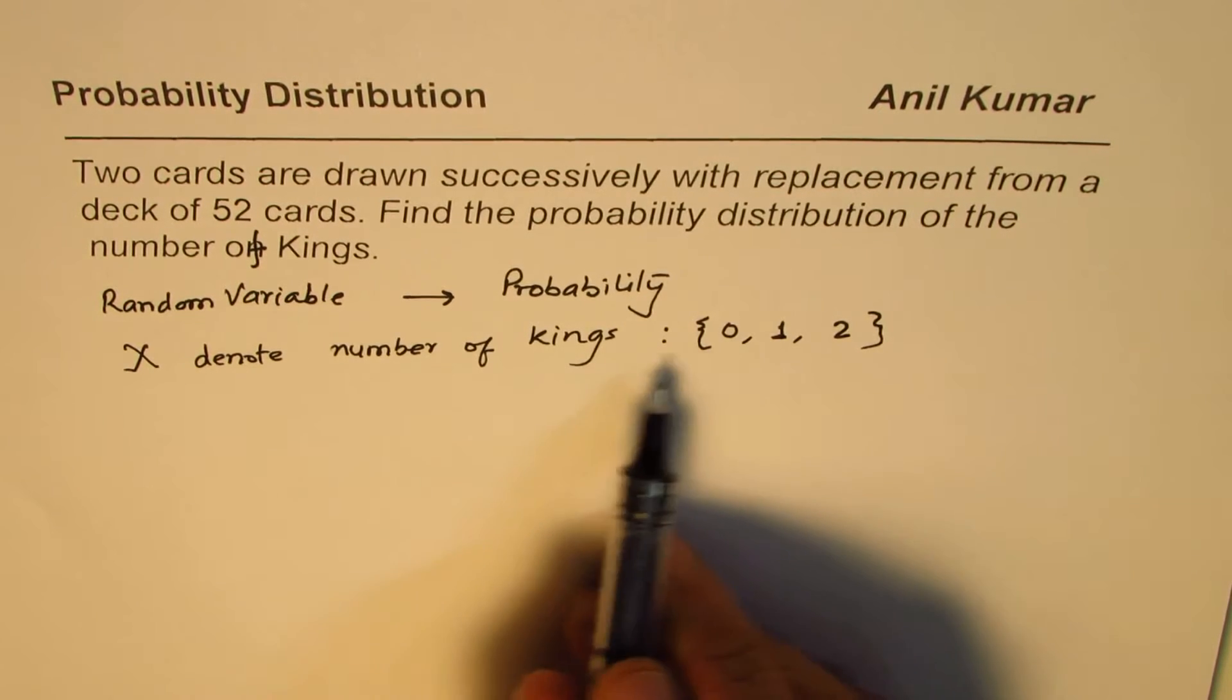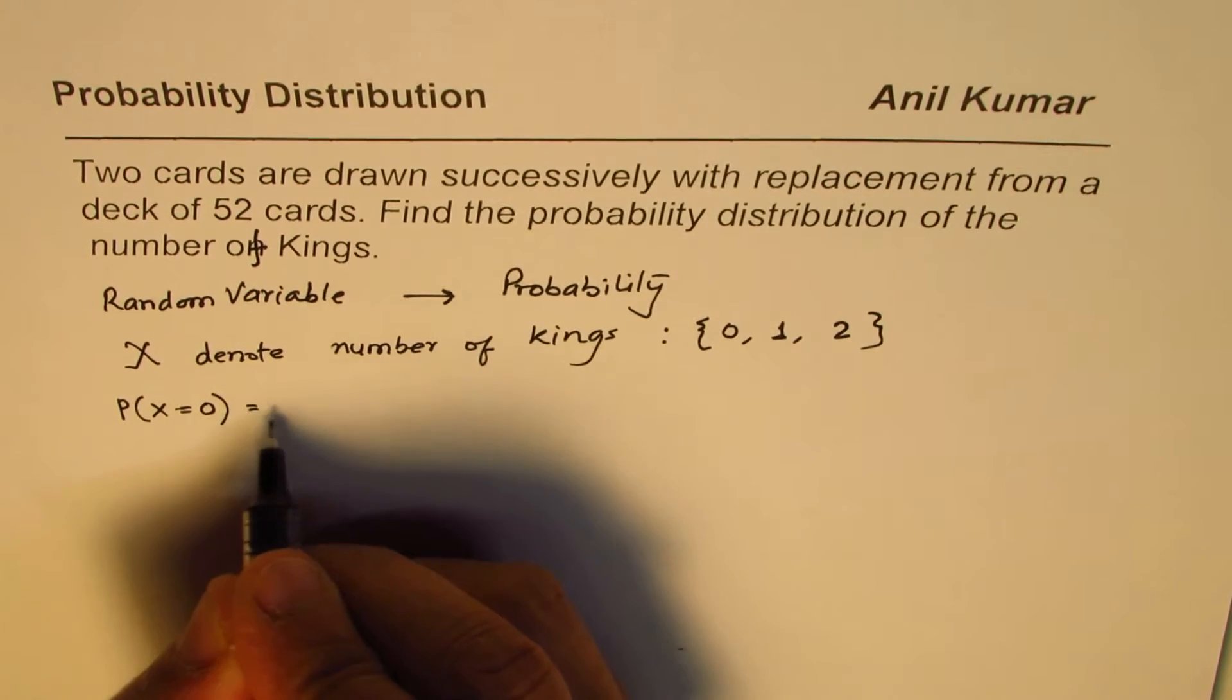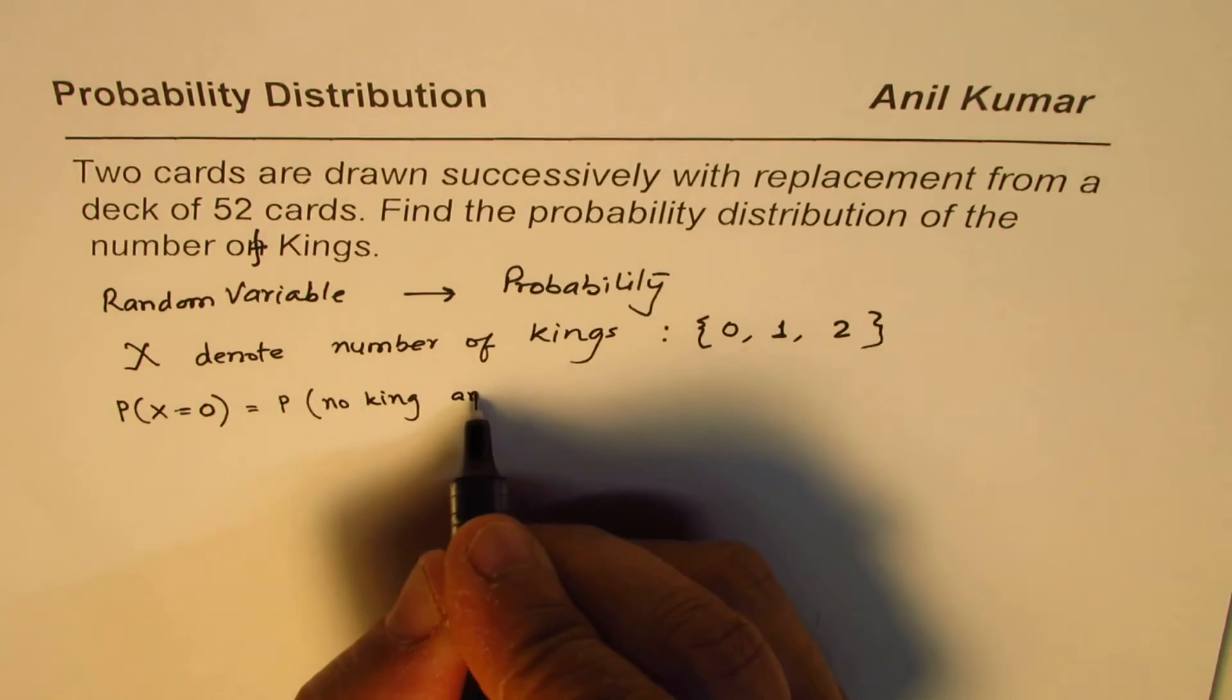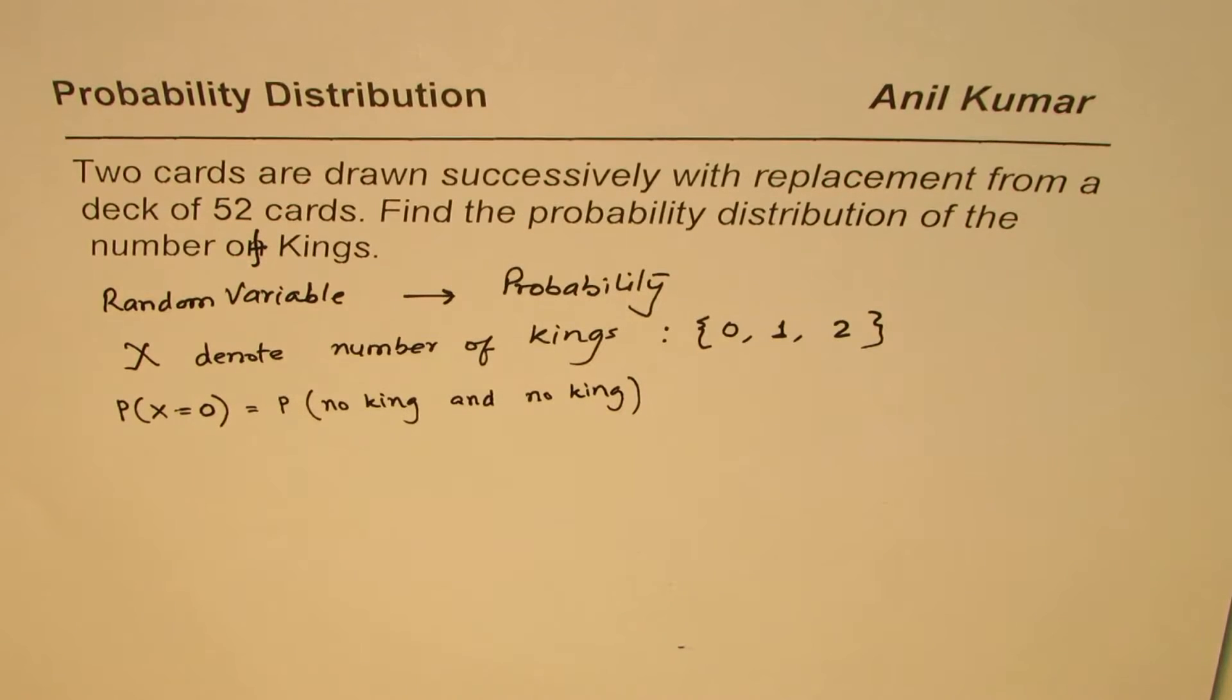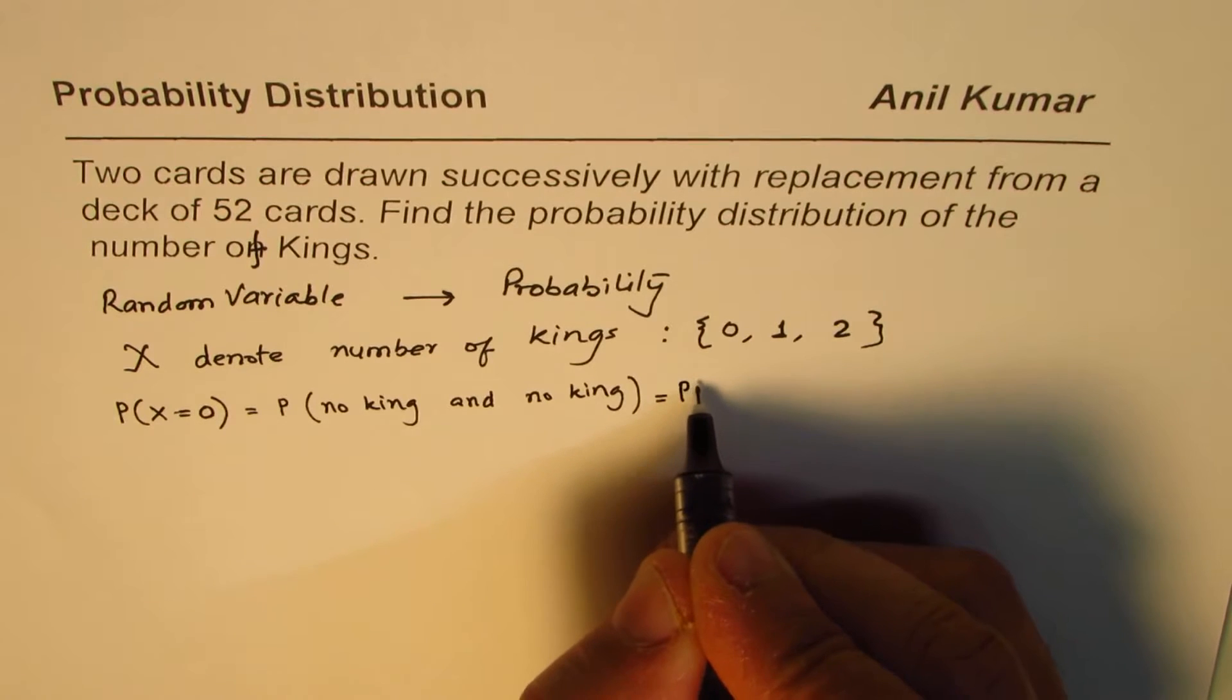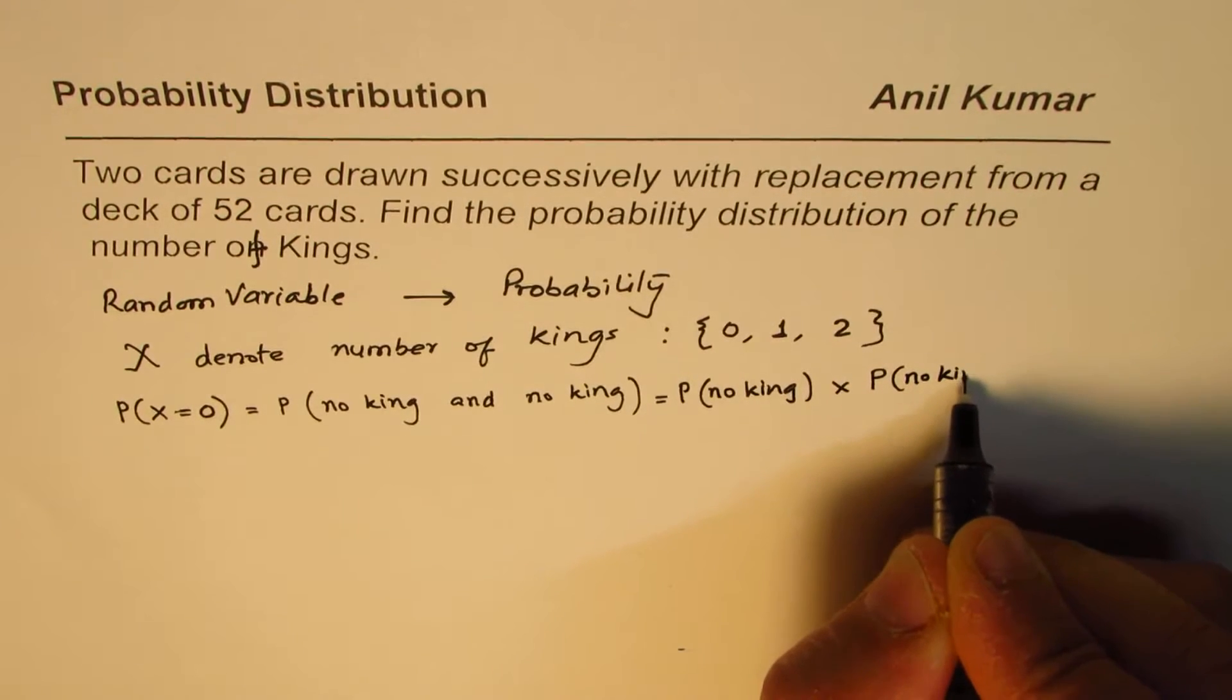Now let us find the probability of each. That is to say, probability when X is 0, that means no king at all. That means probability of no king in the first draw and no king in the second draw. When we have this and operation, then their probabilities get multiplied. So probability of no king times probability of no king.